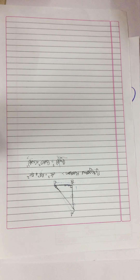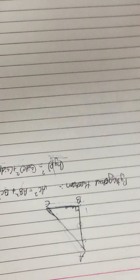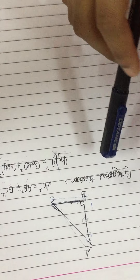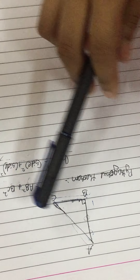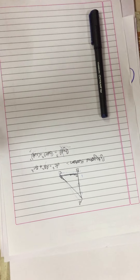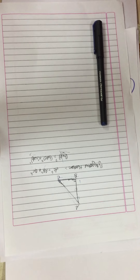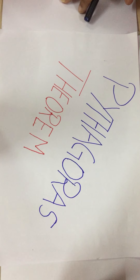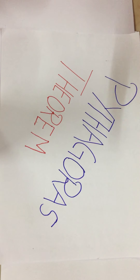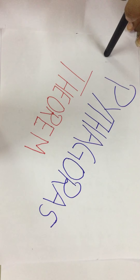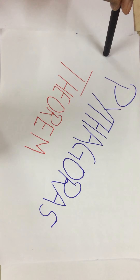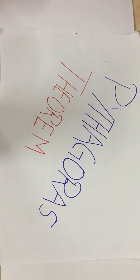If we have a triangle A, B, C — since it is a theorem, it also has a proof. So now we have to use the Pythagoras theorem. Before we dive into proving the Pythagoras theorem, we have another small theorem to learn.